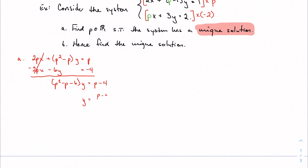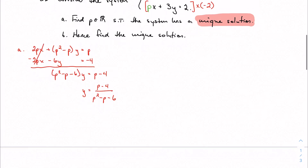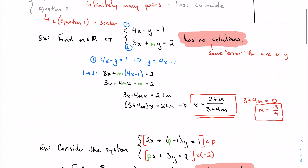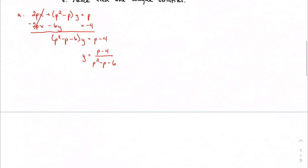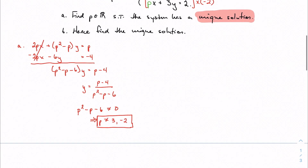We divide to solve for y. For the system to have a unique solution, I need to actually get a number — I don't want zero in the denominator. So P² minus P minus 6 cannot equal zero. Factoring gives (P minus 3)(P plus 2), meaning P cannot equal 3 or negative 2. As long as P is not equal to either of those values, there is a unique solution.